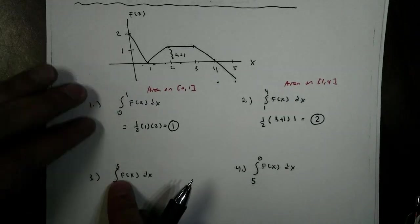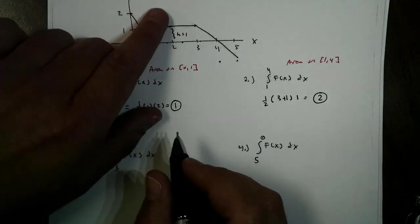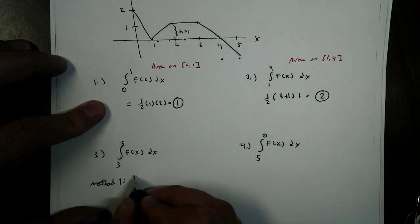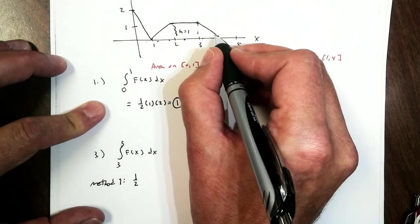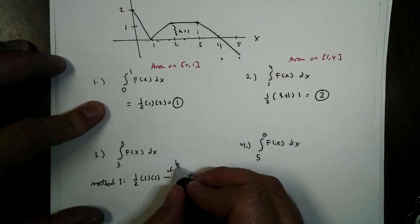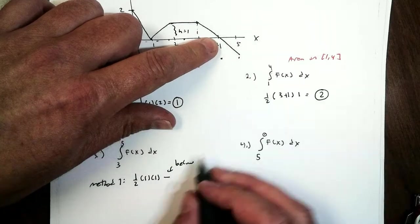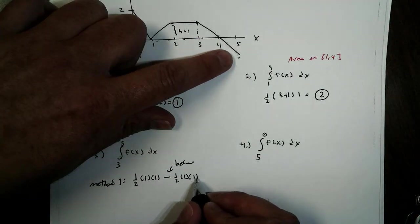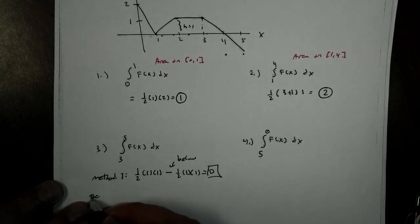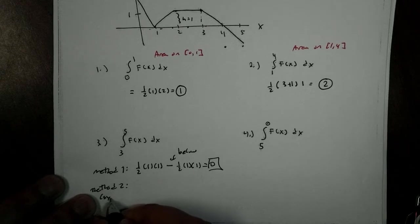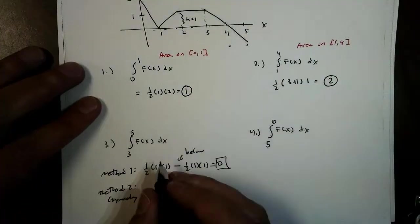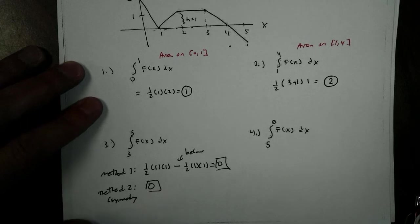What about the area from 3 to 5? There are two ways I can do this. From 3 to 5, method one. The area from 3 to 4 is a triangle. 1/2. The base is 1. The height is 1. Minus. Now, why minus is because we are below the x-axis. This is an area of a triangle. 1/2. Its base is 1. Its height is 1. And, we get an area of 0. Method two, we can use that symmetry that we talked about earlier. Take a look. They're the exact same shape. One is above. One is below. So, this is just going to be 0.